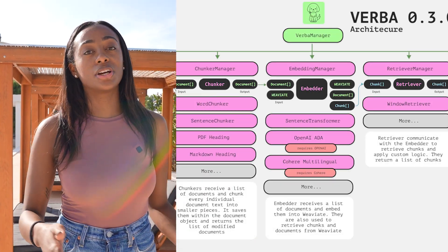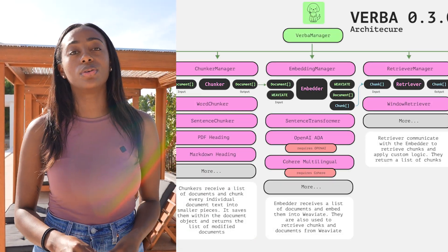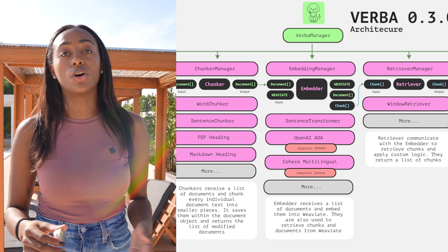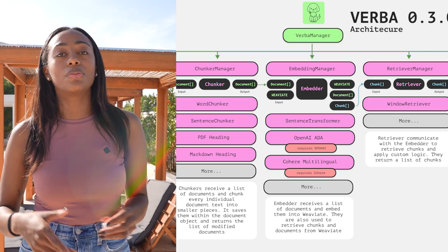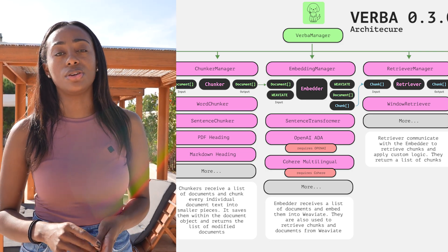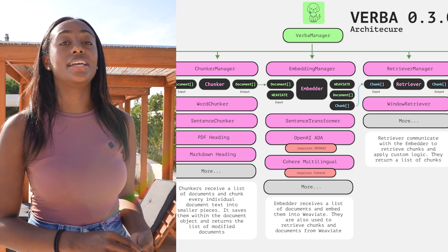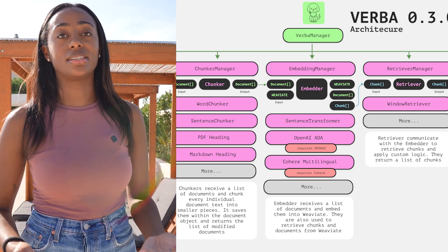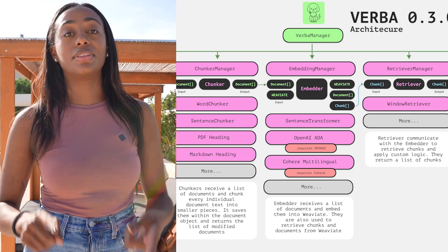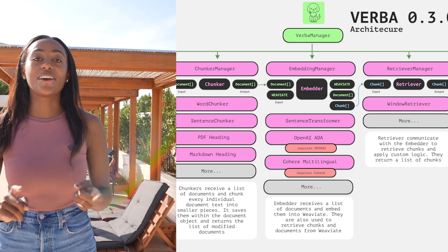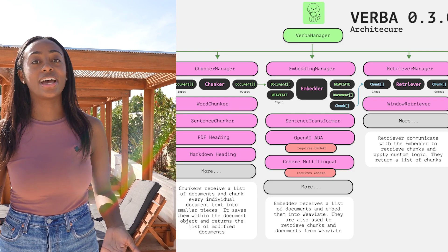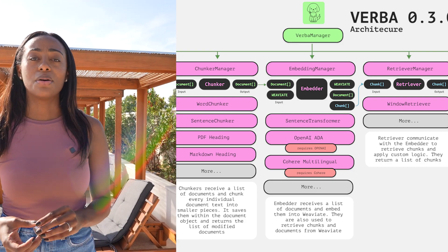Now that we have our chunks, we want to be able to embed our data. In the first version we only relied on OpenAI, but we're now adding more models for you to transform your data into embeddings. We'll have the sentence transformer and the Cohere multilingual model.